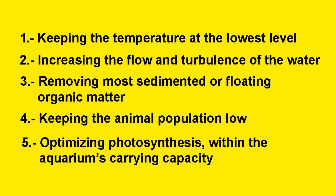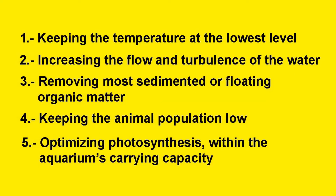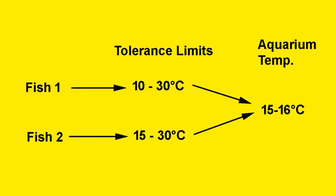Regarding temperatures, my recommendation is quite simple. If we must warm the water, we should regulate it near the lowest temperature the most sensitive creature requires. For example, if we have two fish and one tolerates 10 to 30 degrees Celsius while the other tolerates 15 to 30 degrees Celsius, we must leave the thermostat at 15 or 16 degrees Celsius — not at 30 degrees Celsius.